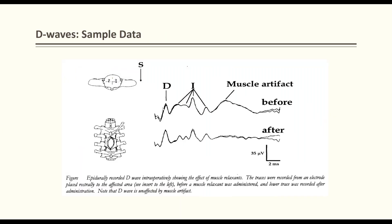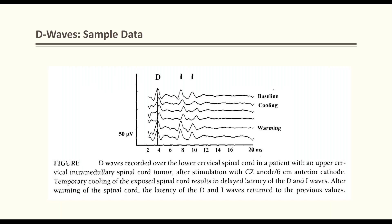Epidural waves: the first wave is the D wave (direct activation of the corticospinal tract), followed by indirect I waves (I1, I2, I3, I4), and then a muscle artifact from paraspinal muscles at about 15ms latency. D wave latency is approximately 3ms from upper cervical, 6ms from lower cervical, and 9ms from lower thoracic. I waves are 1ms apart. I waves are affected by anesthesia, but D waves are not — with high anesthesia, I waves disappear while the D wave remains intact.